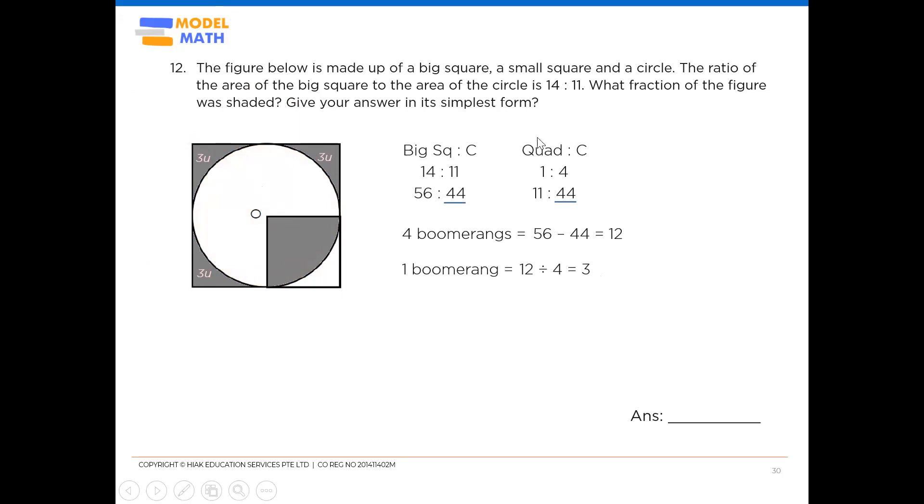I'm left with the quadrant, which is shaded. So quadrant, just look at the ratio. Quadrant is 11 units. So do your annotations into your diagram.